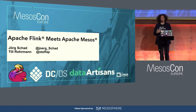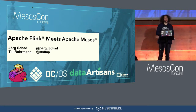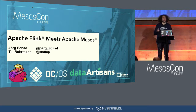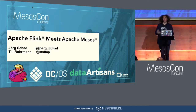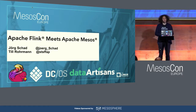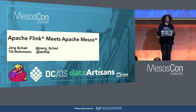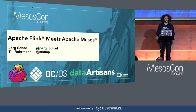This Apache Flink scheduler, which is being written, is a collaboration of people from Lightband, EMC, Data Artisans, and Mesosphere. There are also always other individual community contributions. This is why I especially like this project quite a lot — it's actually a lot of people coming together, developing really cool software, really cool integrations of two open source projects.